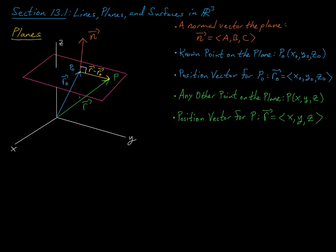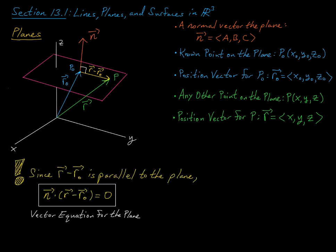Since both position vectors r0 and r have their tips in the plane, the difference vector r minus r0 is parallel to our plane. And if it's parallel to our plane, then it is orthogonal to the normal vector n. So if I take the dot product of n and this difference vector r minus r0, I will get 0.